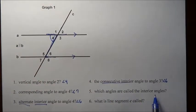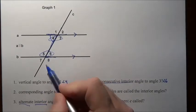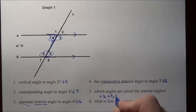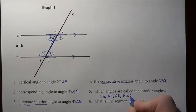Which angles are called the interior angles? Well, we just went over that. The interior angles are three, four, five, and six. So we would say angle three, angle four, angle five, and six. So those are the interior angles.